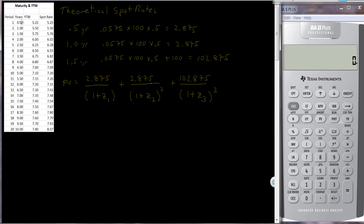It turns out that we already know z1 and z2. The first six-month security is a Treasury bill — already a zero coupon bond — so we take half of its yield to maturity and that will be its spot rate. We also know z2: the one-year Treasury bill is again a zero coupon security, so we take its yield to maturity, divide it by two, and get that six-month rate. Then we just want to solve for z3.